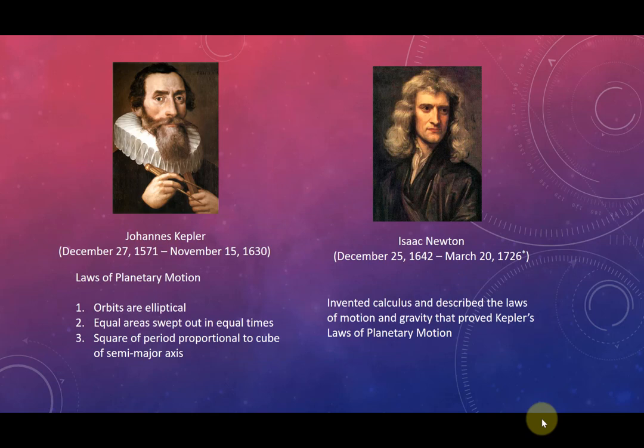To lay some foundation: Johannes Kepler was born in December 1571 and lived to November 1630. Among the things he's famous for, his laws of planetary motion are most important here. Number 1: orbits are elliptical. Number 2: equal areas are swept out in equal times as a planet orbits the ellipse. Number 3: the square of the orbital period is proportional to the cube of the semi-major axis of the ellipse.